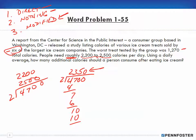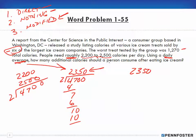The problem says 'using a daily average,' which tells us to use the 2,350 we calculated. It then asks how many additional calories a person should consume after eating ice cream. If my daily average is 2,350, and eating the ice cream accounts for 1,270 calories, then I need to find the difference — I subtract one from the other to find how many additional calories are needed.